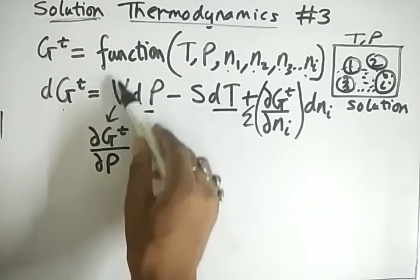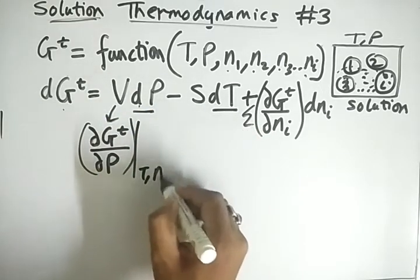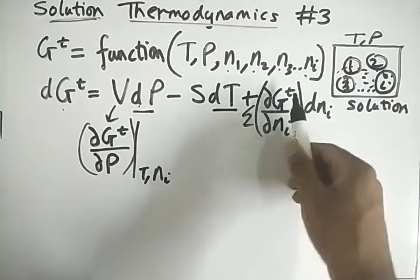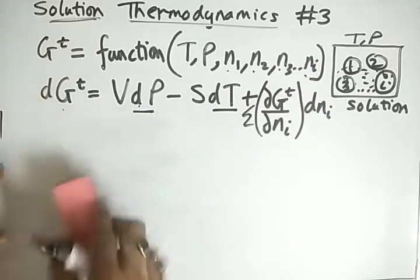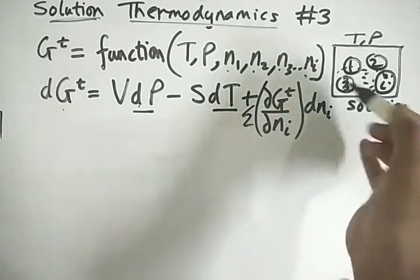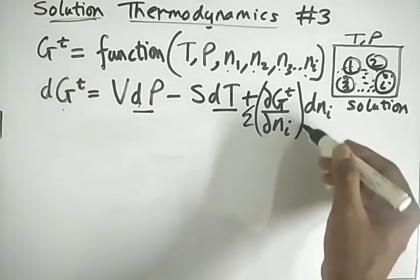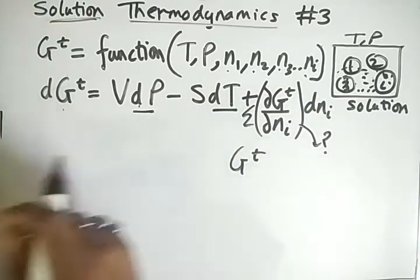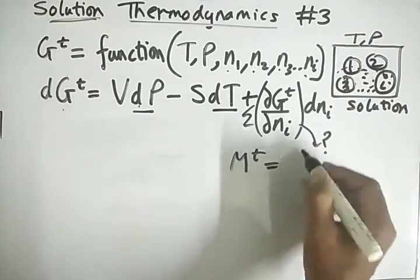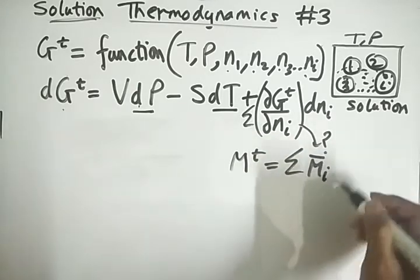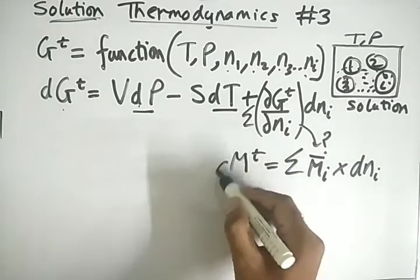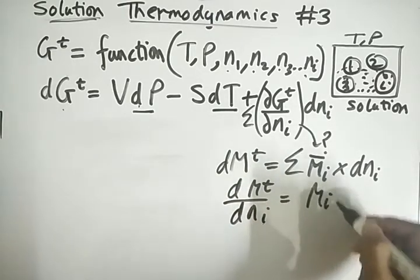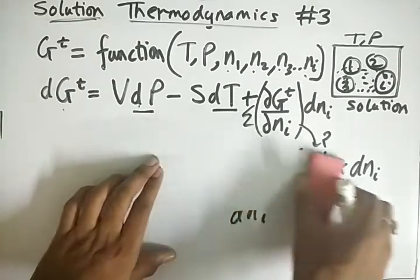Similarly, S is the partial differentiation keeping everything else constant. The term del Gt upon del ni is a summation over n1, n2, n3. We have seen that del(Mt) equals the summation of the partial molar property times the change in moles of i. So del(Mt)/dni is the partial molar property M-bar of i.